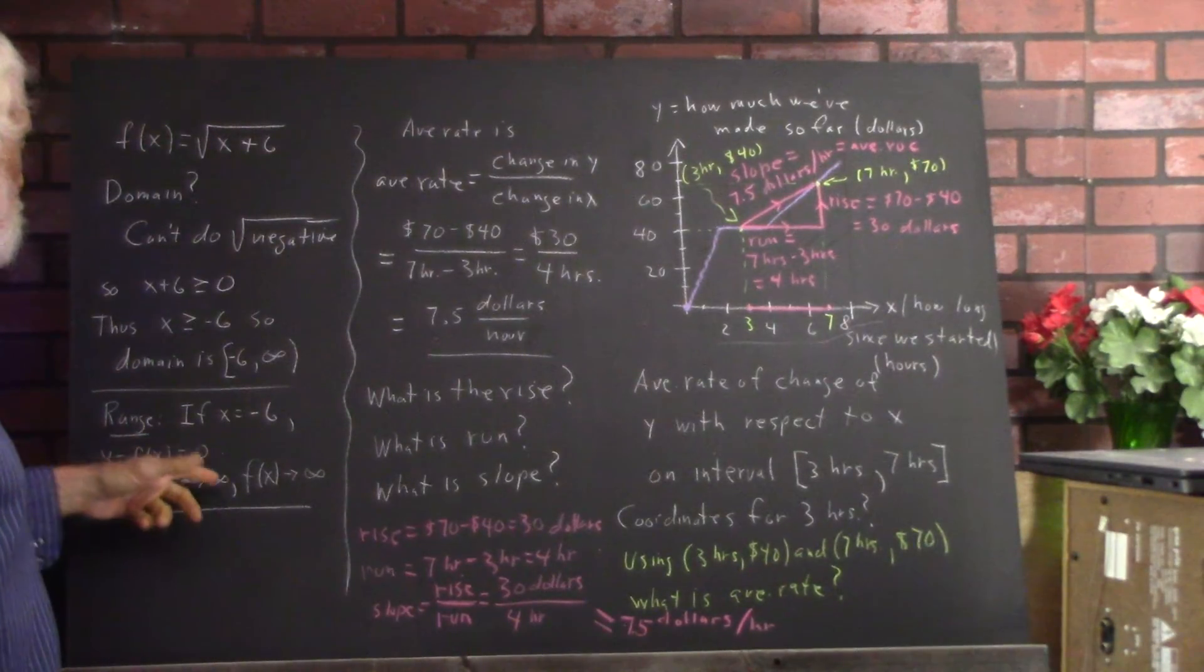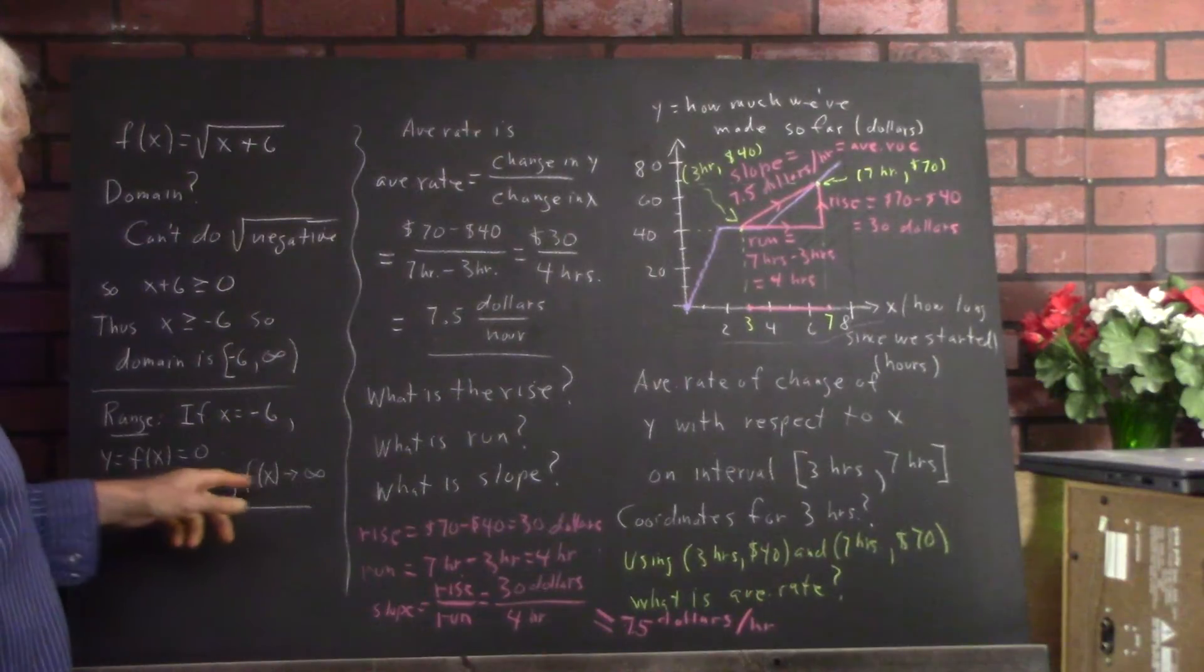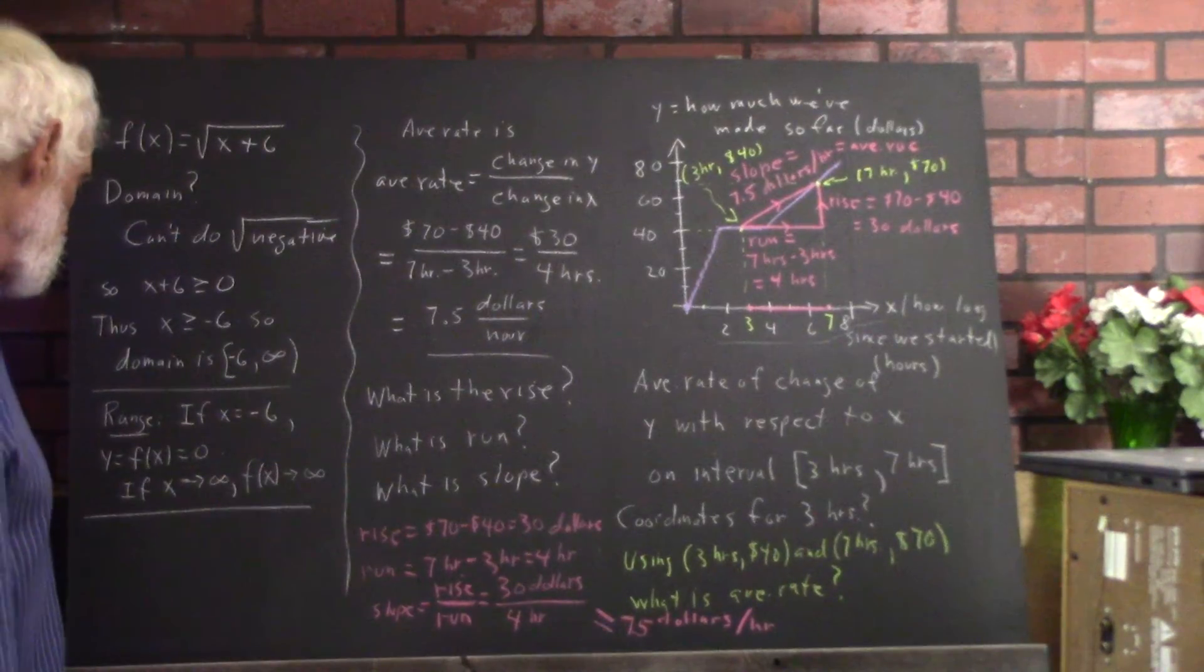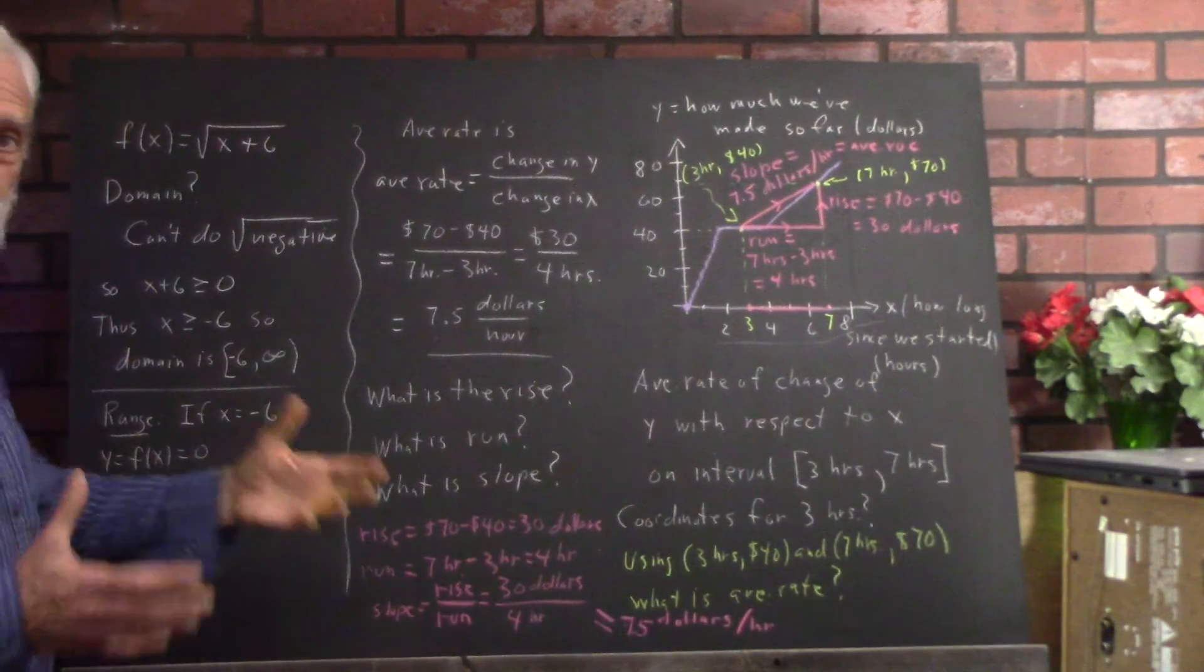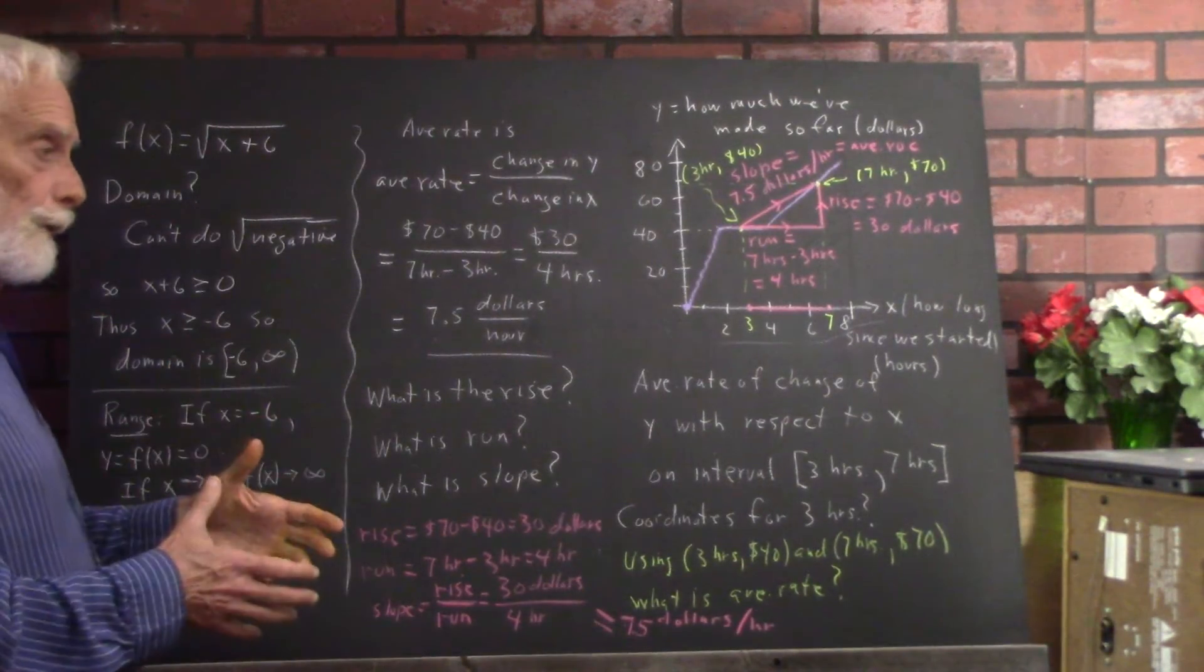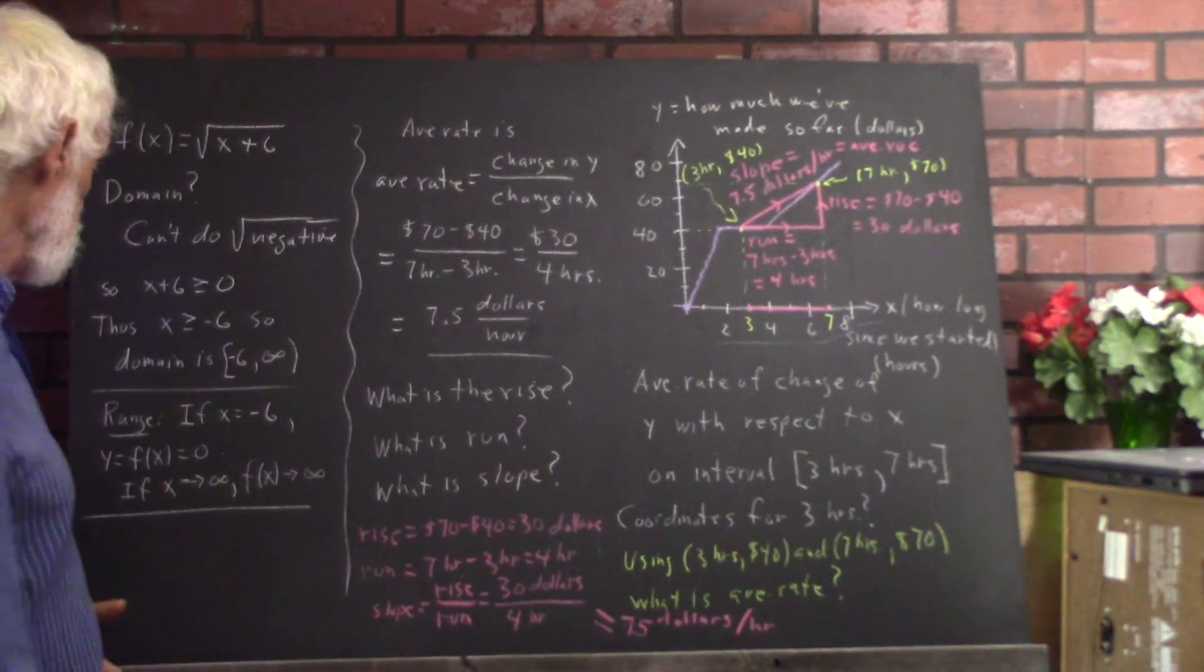If x approaches infinity, f of x approaches infinity. Now what do we mean by approach infinity? This means x gets bigger than anything. No matter what number you can think of, x can be bigger than that number.